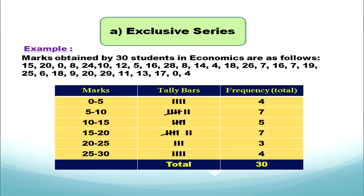The most important point in exclusive series: the value of 5 in the first class will not be included — it will be included in the next class. For the first class (0 to 5), we count values 0 to 4 only, giving 4 tally marks and frequency 4. For the next class (5 to 10), we count from 5 up to 9 — not including 10 — and get 7 tally marks, so frequency is 7. We continue this process for all classes.